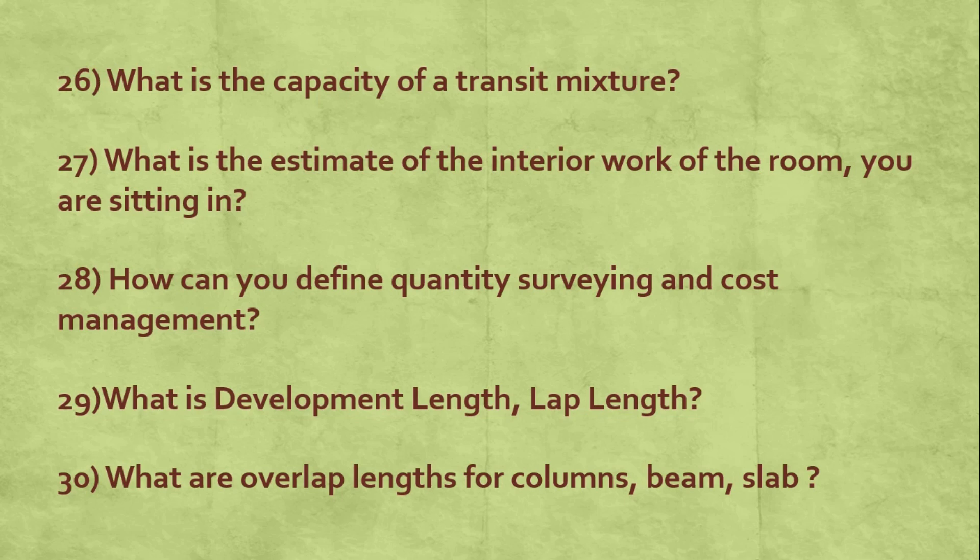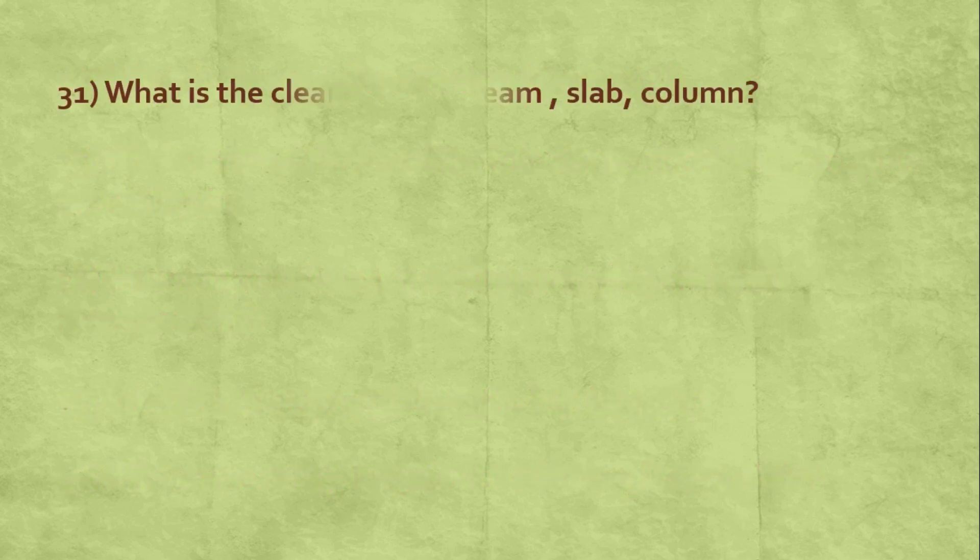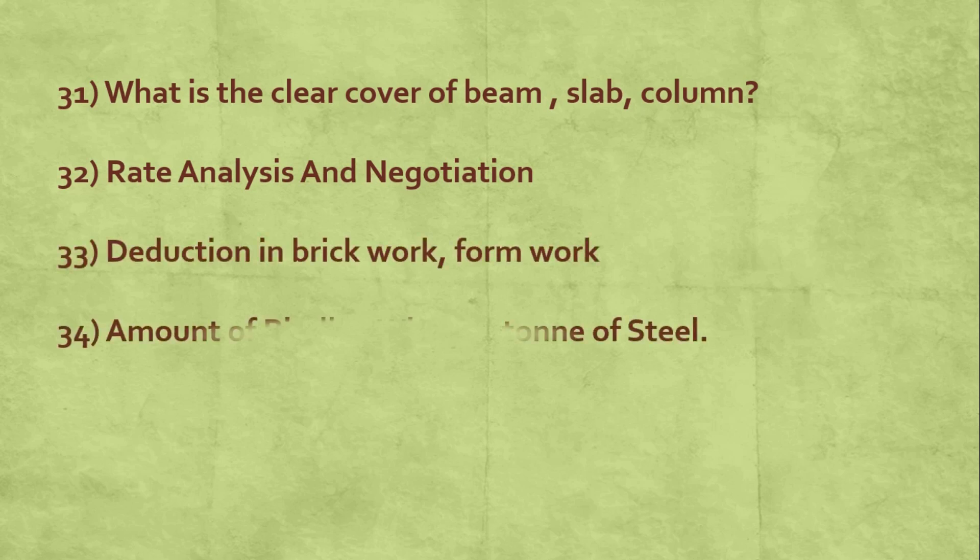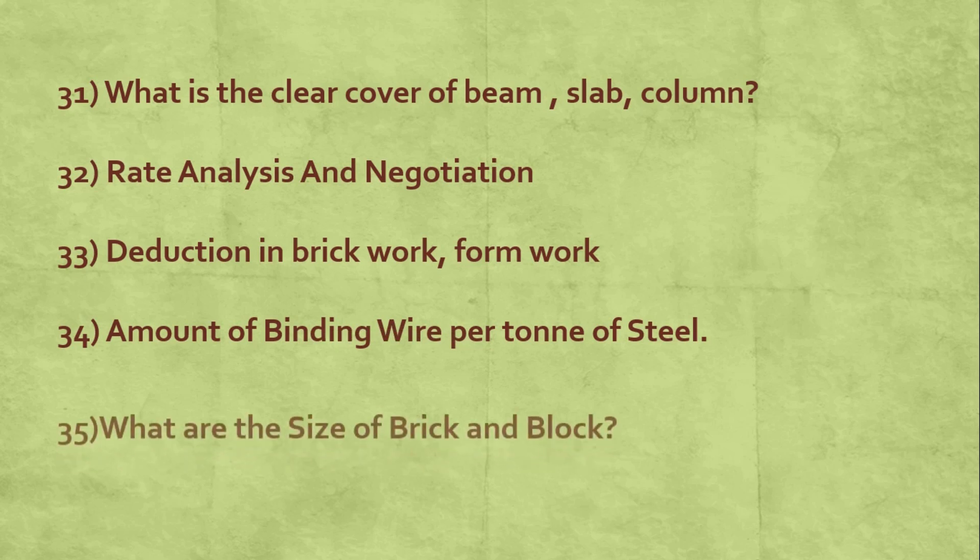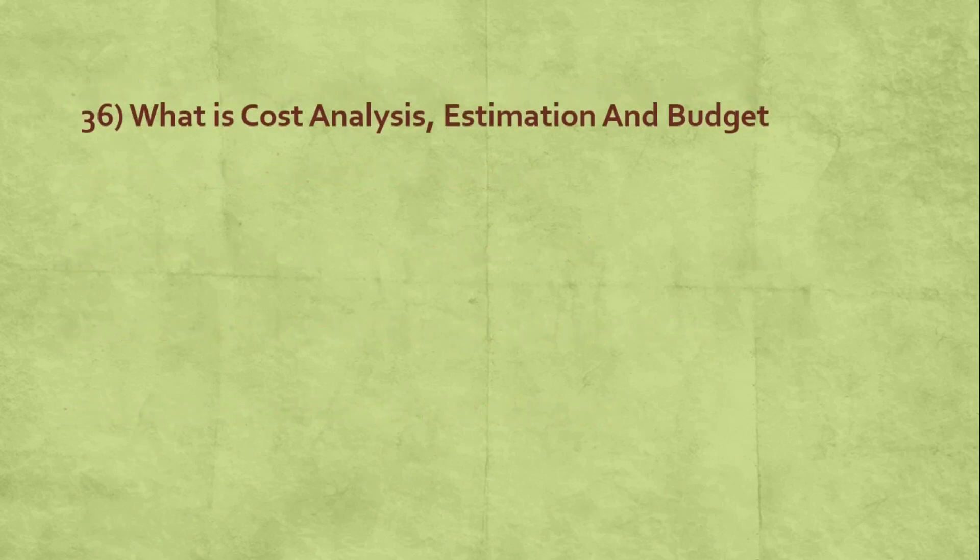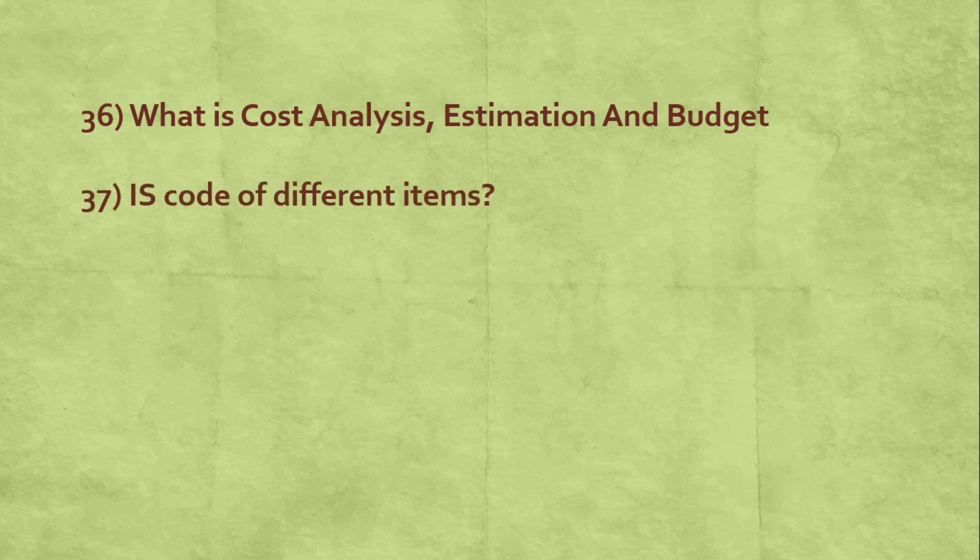What is the clear cover of beam, slab, column? Rate analysis and negotiation. Deduction in brickwork and formwork. Amount of binding wire per ton of steel. What are the sizes of brick and blocks? What is cost analysis, estimation, and budget? And the last question is IS codes of different items.